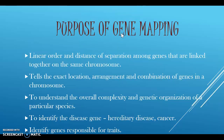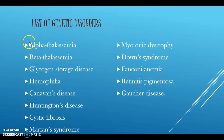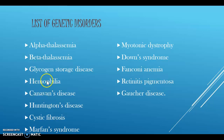The various hereditary diseases which can be identified and rectified with the help of genetic mapping include alpha thalassemia, beta thalassemia, glycogen storage diseases, hemophilia, Canavan's disease, Huntington's disease, cystic fibrosis, Marfan syndrome, myotonic dystrophy, Down syndrome, Fanconi anemia, retinitis pigmentosa, and Gaucher's disease. The genes responsible for these disorders can be identified by both physical and genetic mapping, and can be rectified by the respective cloning process.